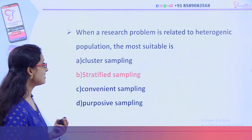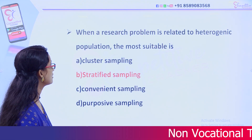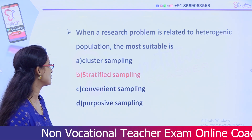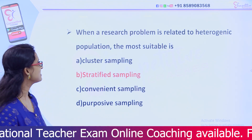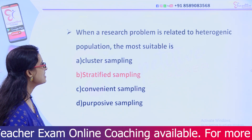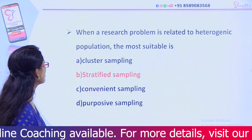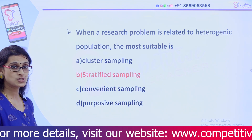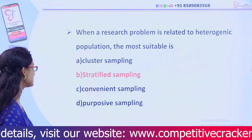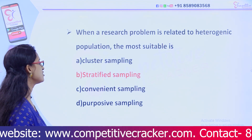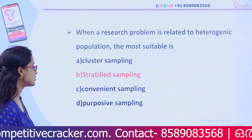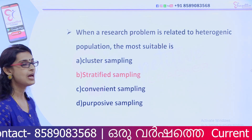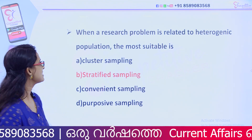When a research problem is related to a heterogeneous population, the most suitable sampling method is: Option A, Cluster Sampling; Option B, Stratified Sampling; Option C, Convenient Sampling; and Option D, Purposive Sampling.